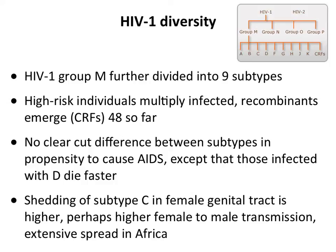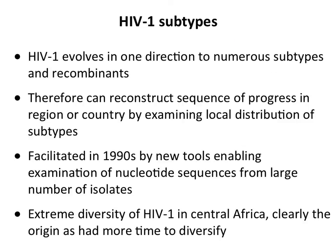HIV-1 is further divided into subtypes: A, B, C, D, F, G, H, J, K, and circulating recombinant forms (CRFs). CRFs arise when high-risk individuals like sex workers get multiply infected; those viruses recombine within them and spread because they're very fit. There are 48 recombinant forms identified so far. As far as we can tell, all subtypes can cause AIDS. People infected with subtype D seem to die faster; subtype C has higher female genital tract shedding which may facilitate female-to-male transmission, possibly why subtype C has spread so extensively in Africa.